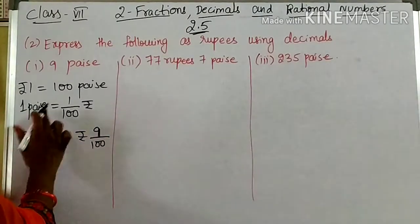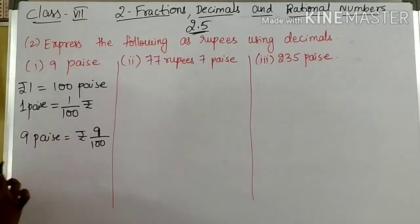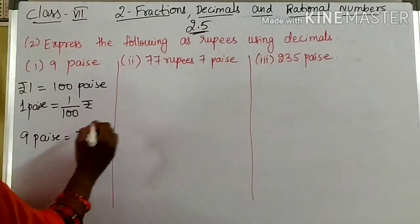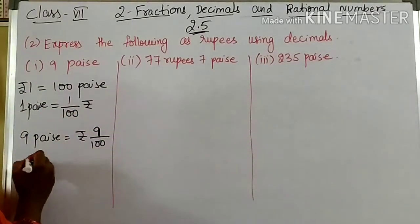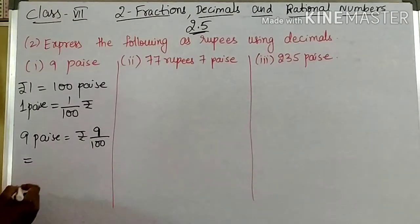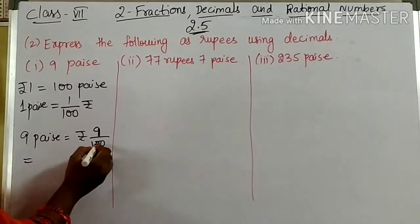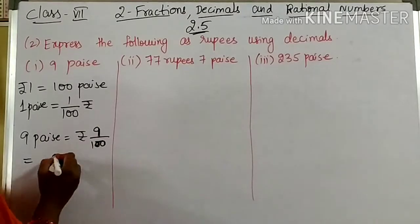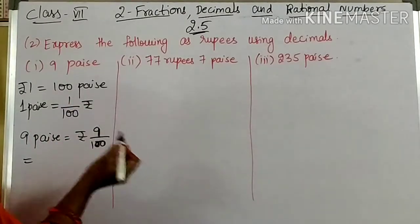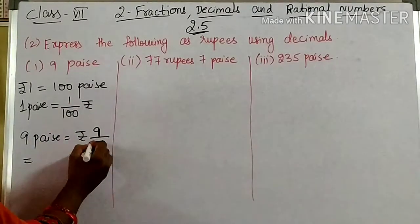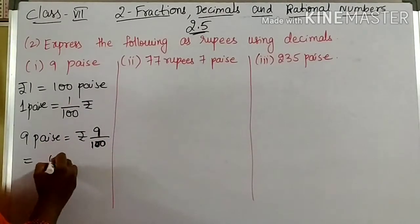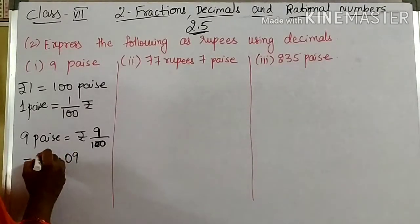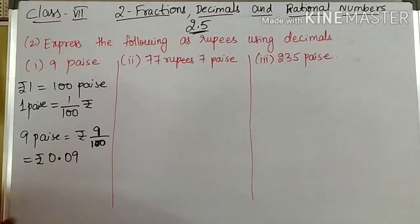1 paise is 1/100. 2 paise is 2/100. 3 paise is 3/100. Similarly, 9 paise is 9/100. So 9/100 convert into decimal: in the denominator, 2 zeros are there. So after decimal, you should get 2 numbers. So you have to keep 0.09. This is rupees. 0.09 is the answer.